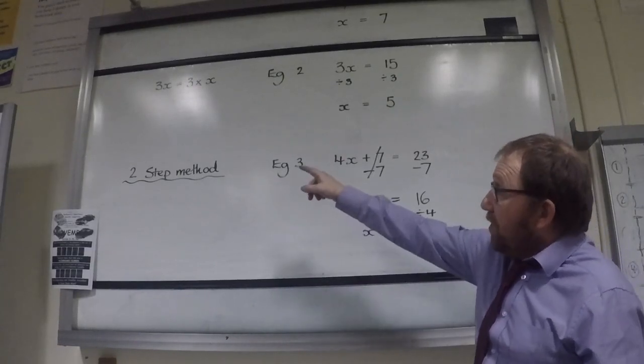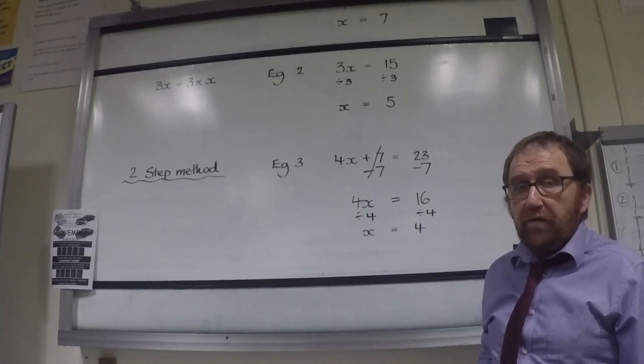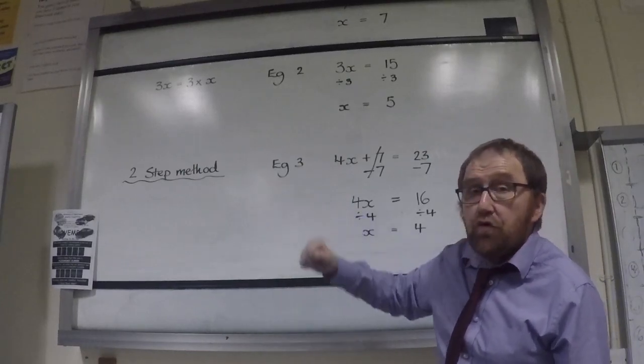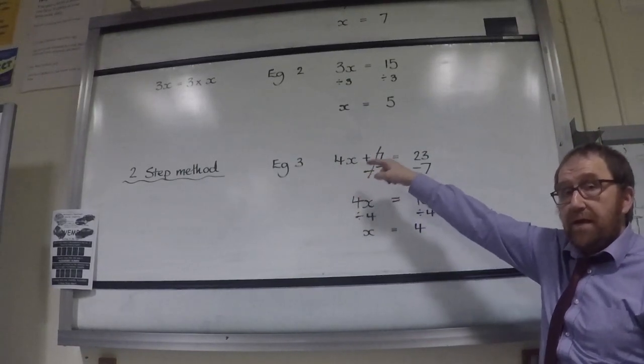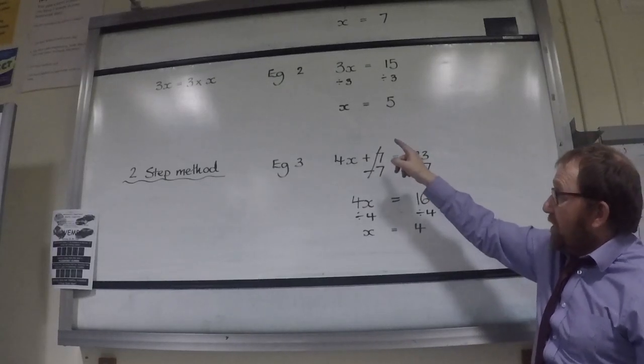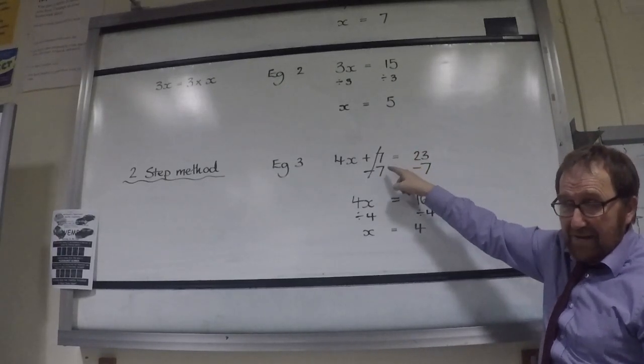In this last equation, we combine the two methods that we have looked at into the two-step method. First of all, I want letters on one side, numbers on the other. So I've got to get rid of plus 7 by subtracting 7 this time.